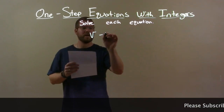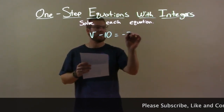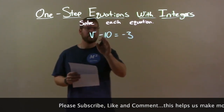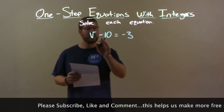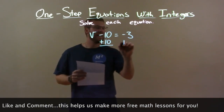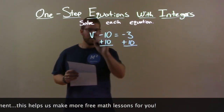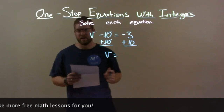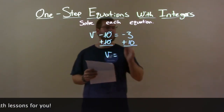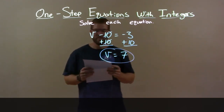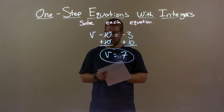v minus 10 equals negative 3. We have v minus 10 equals negative 3. Opposite of subtracting 10 is adding 10. We want to get v by itself, so I add 10 to both sides. That leaves v by itself on the left because negative 10 and positive 10 cancel each other out. And negative 3 plus 10 is a positive 7. So my final answer here is v equals 7.